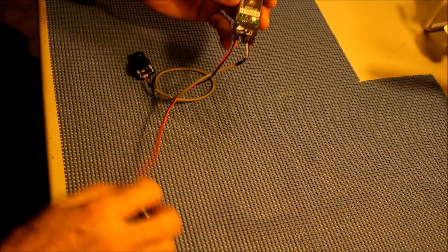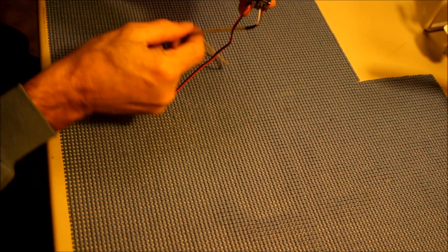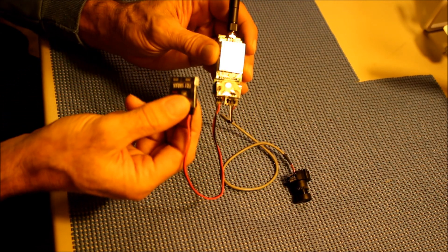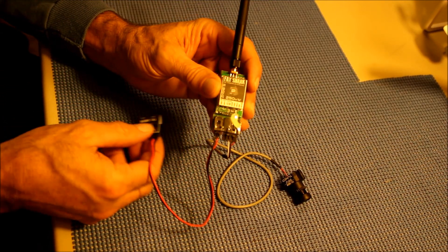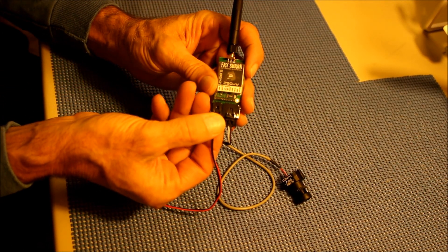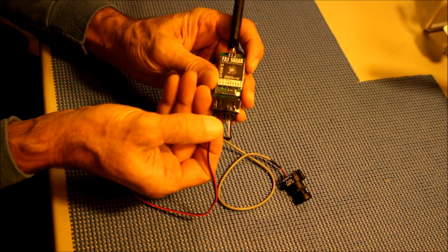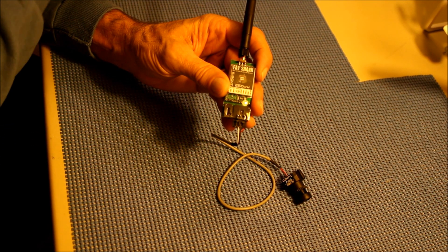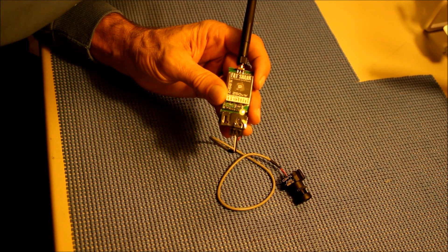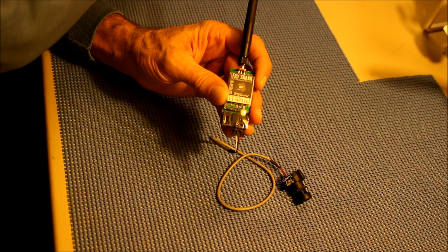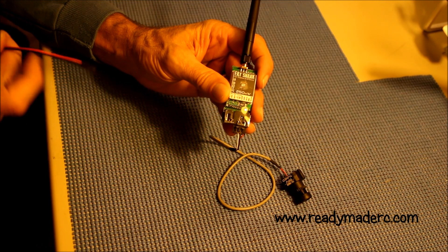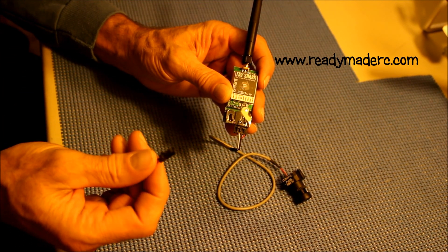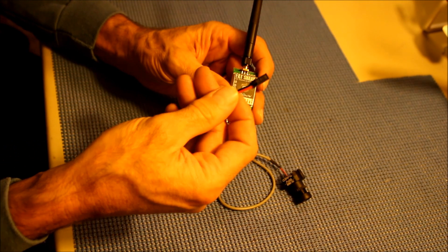In order to do that we need to remove the original power cable that comes with the transmitter and we do that by just pressing down and removing the connector like that. There is a company called ReadyMadeRC that sells a replacement cable for powering it with the auxiliary connection and this is the cable here.